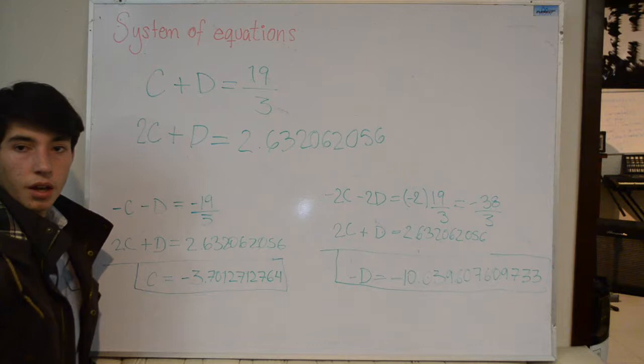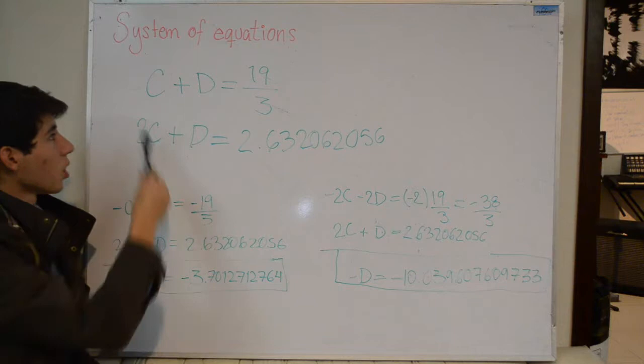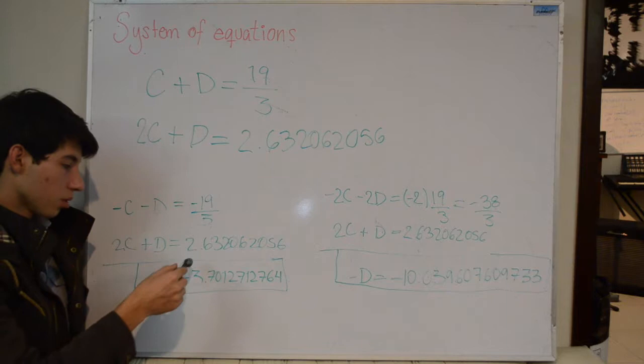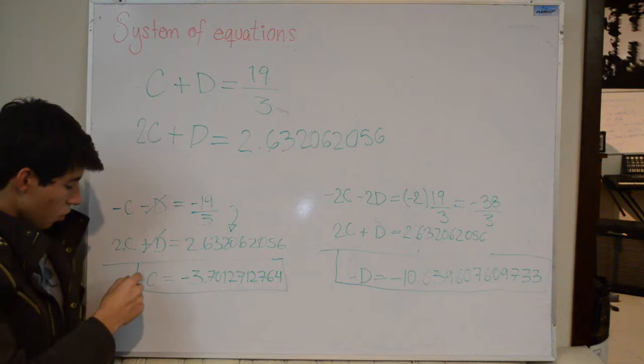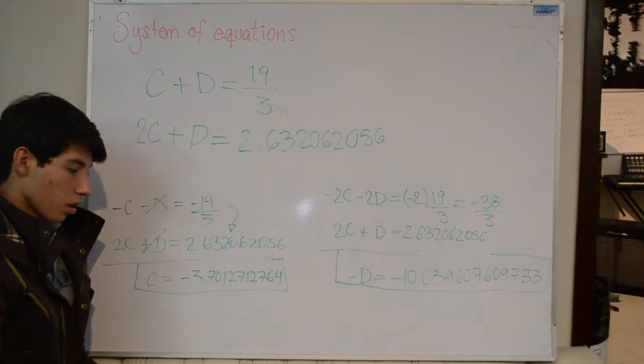So the first system of equations will be for getting c. So we multiply everything by minus 1 plus 2c plus d equals 2.63. And if we add this up, we get that c equals minus 3.71271764.